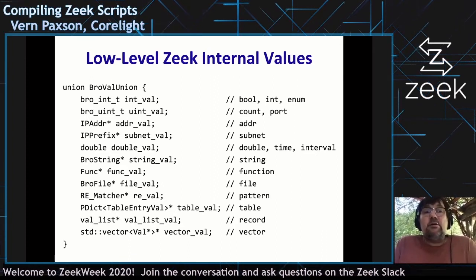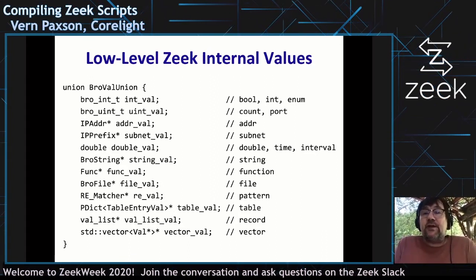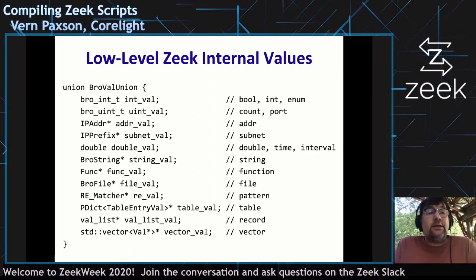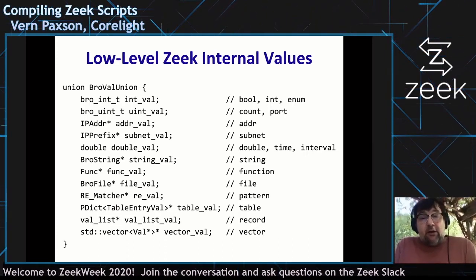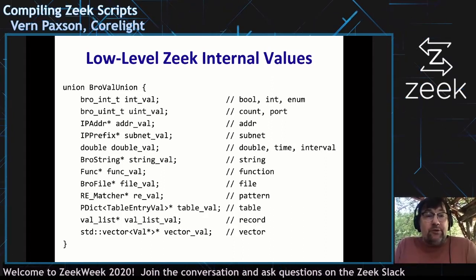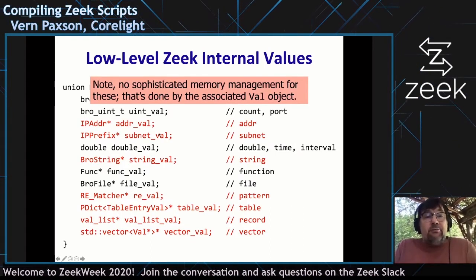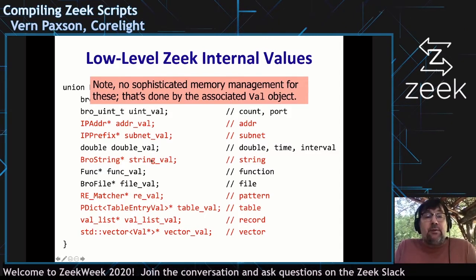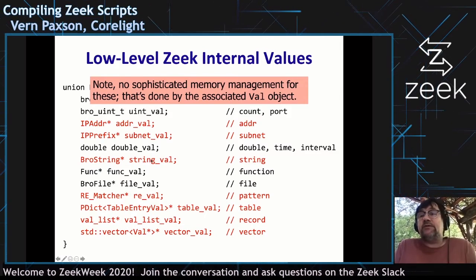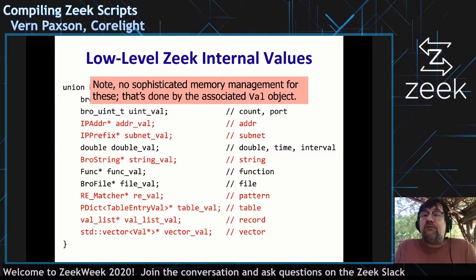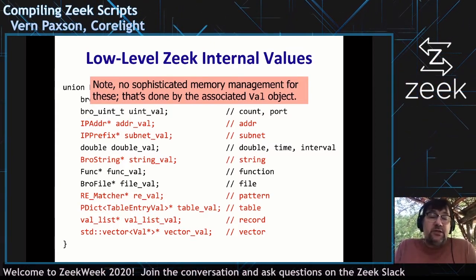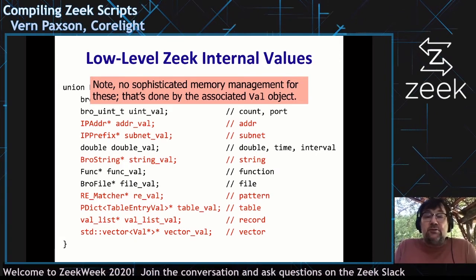Here is the low-level representation of values. The union type has all these different things in it. One thing to note is that for most of these they're represented as low-level things — not Vals themselves — so they don't have reference-counted memory management, and that's something we're going to need to address.